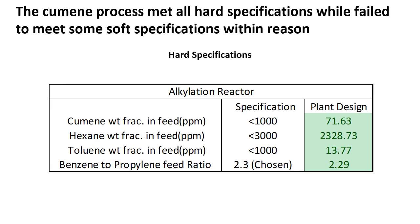Hard specifications were also present for our alkylation reactor, focused around the concentration of different products entering the reactor feed. We are staying below those levels as shown in the green column. We also picked a benzene to propylene feed ratio and stayed within those parameters. Other minor specifications include a maximum operating temperature for the reactor, which we are well within. All phases within the reactor are in liquid phase, which is why a higher pressure was chosen.